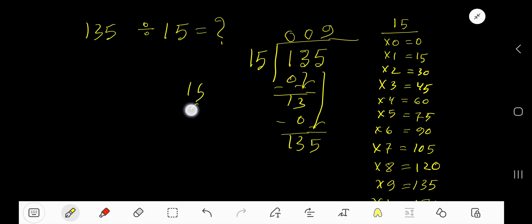So 9 times 15, that gives you 135. Let me check. 9 times 5, 35. Write 5, carry 3 to the next column. 9 times 1, 9 plus 3. Look, sorry. 9 times 5, that gives you 45. Write 5, carry 4 to the next column. 9 times 1, 9 plus 4, 13. So 135.